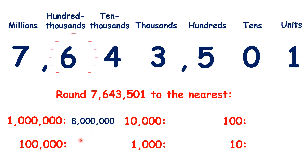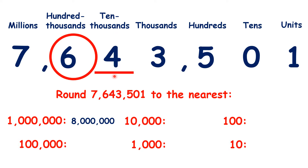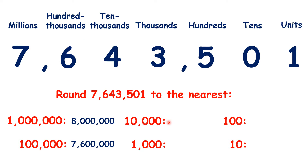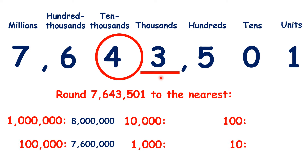To the nearest hundred thousand, we look to the ten thousands, and because the digit is a 4, we need to round down, so we have 7,600,000. To the nearest ten thousand, we look to the thousands, and again we're rounding down, so we have 7,640,000.